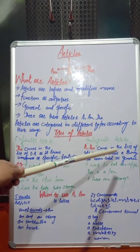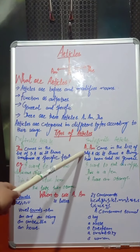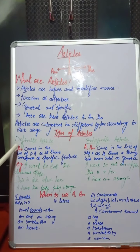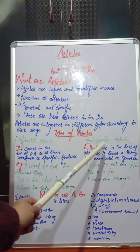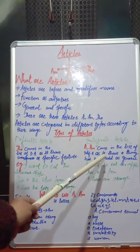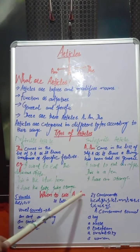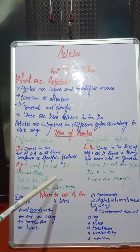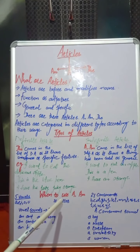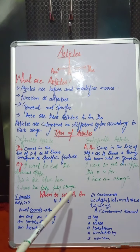So I hope you understood the difference between definite and indefinite articles — where we can use 'the,' and where we can use 'a' and 'an.' Now I will tell you more about when to use 'a' and 'an.' We have 26 letters, A to Z, and they are categorized differently.